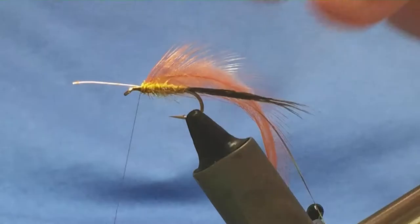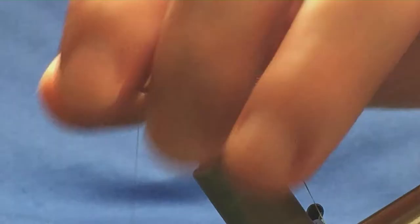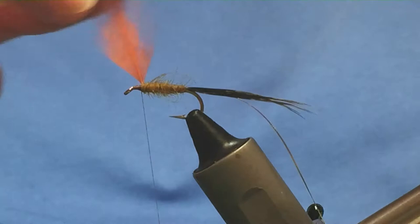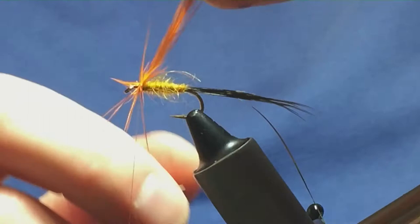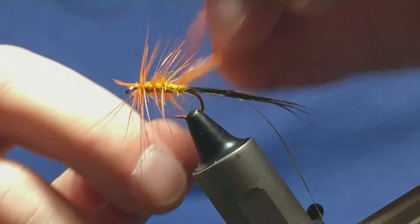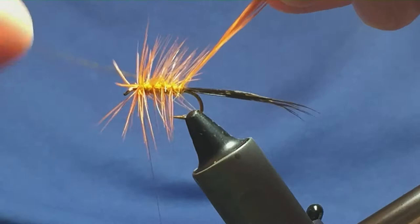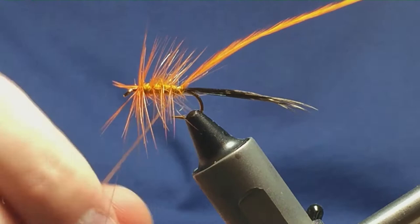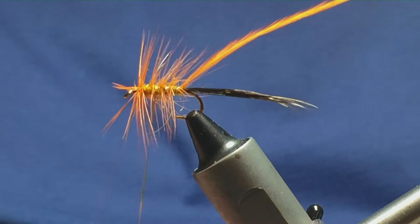Now all I like to do is to come round with the hackle and get two turns going at the shoulder. And then with the other four turns down the body. Now just going to come round with your oval silver tinsel at this stage.